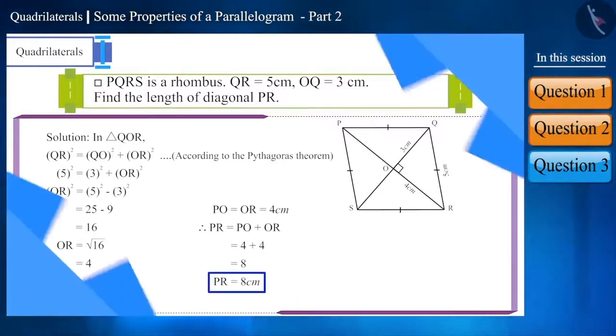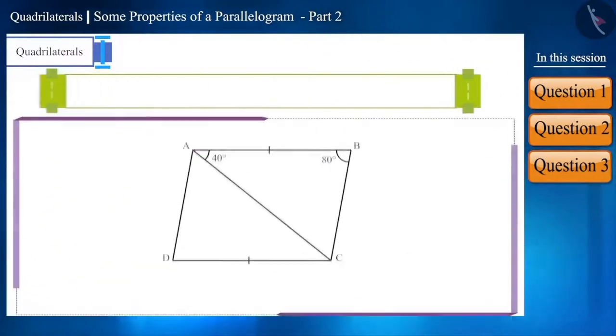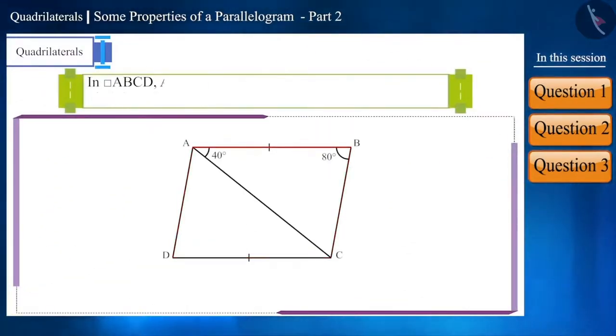Now, let's move to the last question of this session. In quadrilateral ABCD, side AB is parallel to side DC, side AB is equal to side DC. Angle BAC equals 40 degrees and angle B equals 80 degrees. Find the values of angle DCA and angle D.